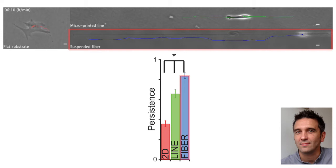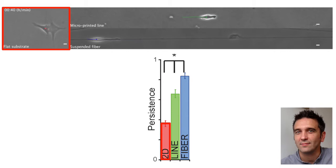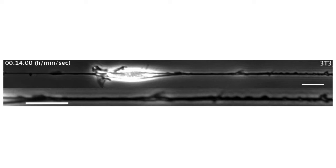However, what we observed is that the cell seems to choose one direction, and on fiber they were keeping this direction — very high persistence. While on 1D lines they were changing direction more often, and on 2D substrate they were going randomly, scanning the substrate.